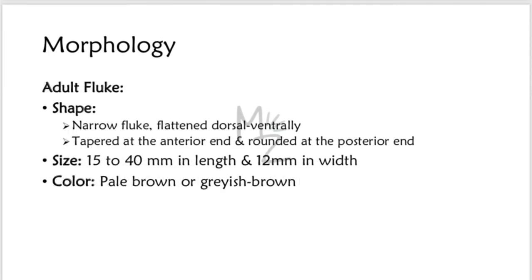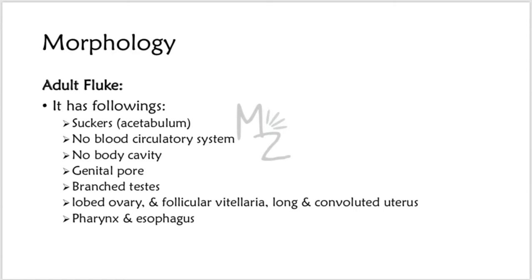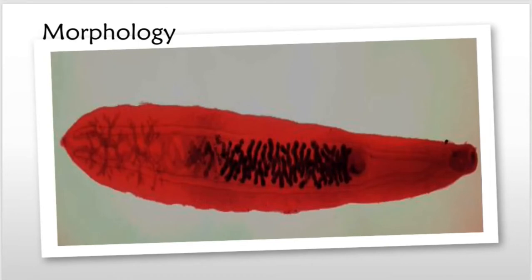The adult fluke is narrow and flattened dorso-ventrally, tapered at its anterior end and rounded at the posterior end. It is 15 to 40 mm in length and 1 to 2 mm in width, pale brown or grayish brown in color. The adult fluke has suckers called acetabulum, no true circulatory system, and no body cavity. It has a genital pore for releasing fertilized eggs, branched testes, a lobed ovary, and reproductive organs covering most of the body. It also has a pharynx and esophagus. This organism is hermaphrodite — meaning both male and female reproductive organs exist in one body.